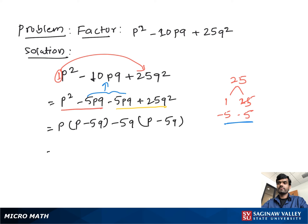From both sides we take out P minus 5Q as a common factor, then we have P minus 5Q times P minus 5Q, and this is our final factor.